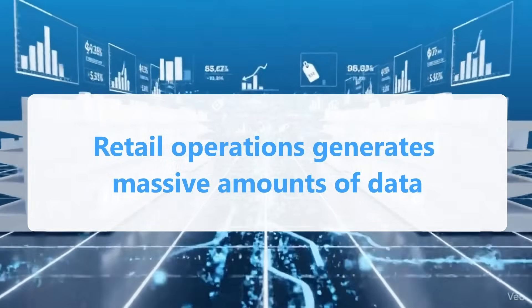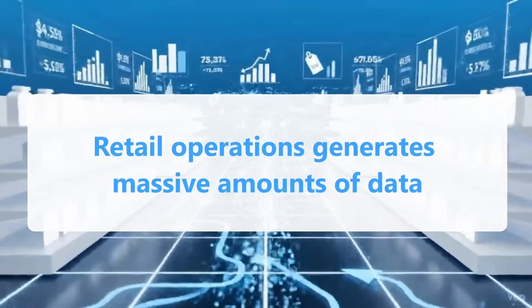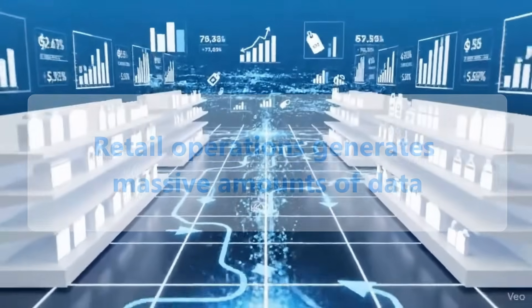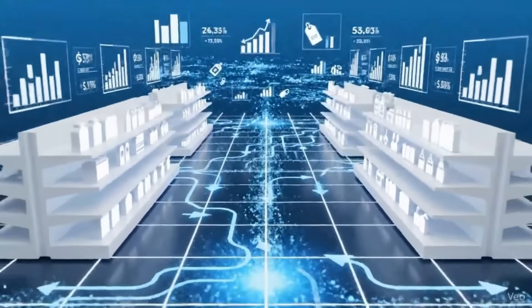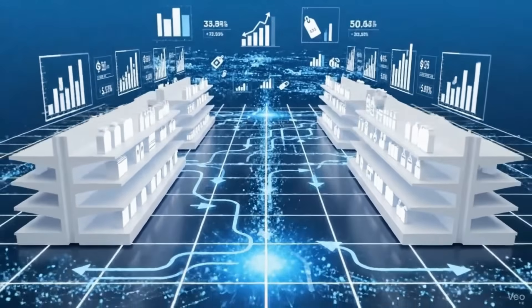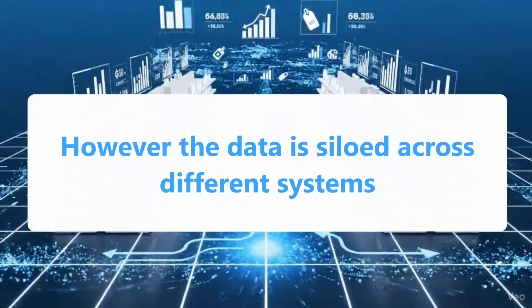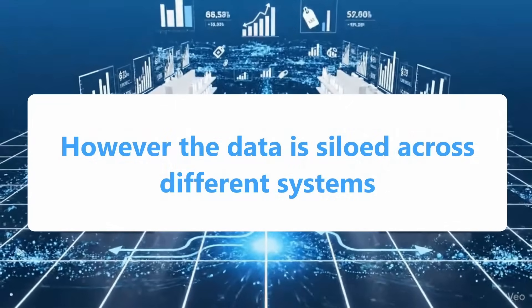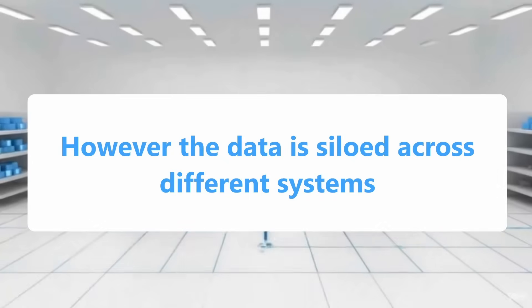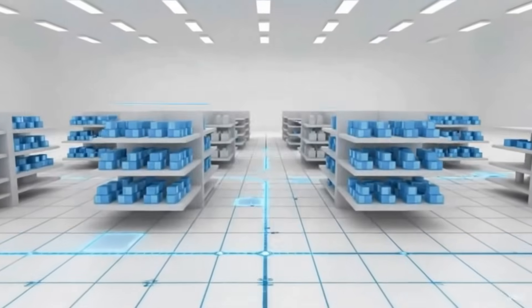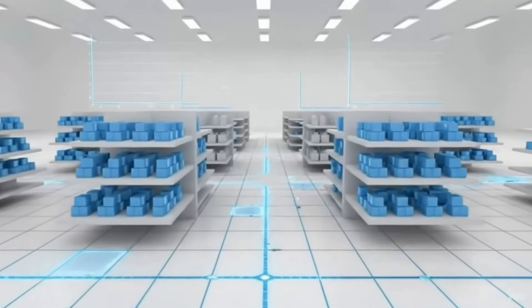Retail operations generate massive amounts of data every day, from POS transactions to inventory updates and supply chain metrics. Yet this data is often fragmented across systems, making it difficult for store and category managers to get a clear, actionable view of performance.